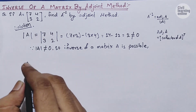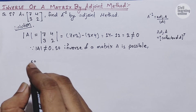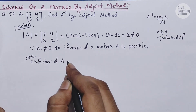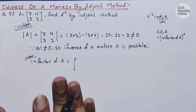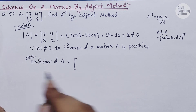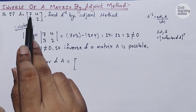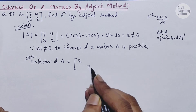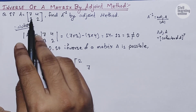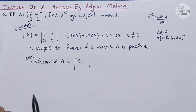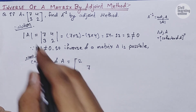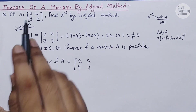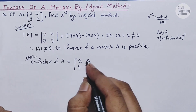The cofactor of matrix A is easy to calculate. We simply interchange the position of the diagonal elements: 7 and 2 swap with each other, so 2 occupies the position of 7 and 7 goes where 2 was. For the off-diagonal elements 3 and 4, we also swap their positions and change their signs — since both are positive, both take negative signs, giving us -3 and -4.